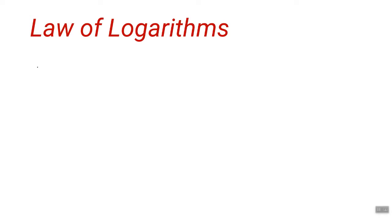The purpose of this video is to explore how we move from the activity powers of 10 into developing the laws of logarithms. We're going to start with one of the first results we saw: that 2 could be written approximately as 10 to the power 0.3, and that this meant that log base 10 of 2 was approximately 0.3. We're going to generalise this in a little while.